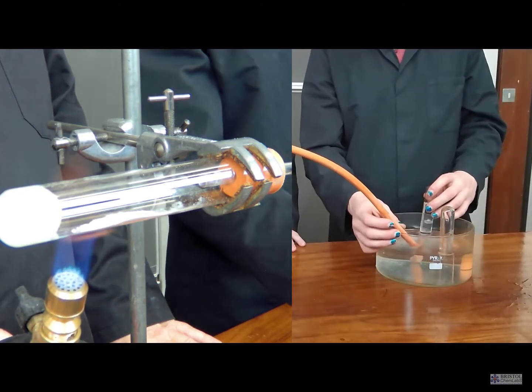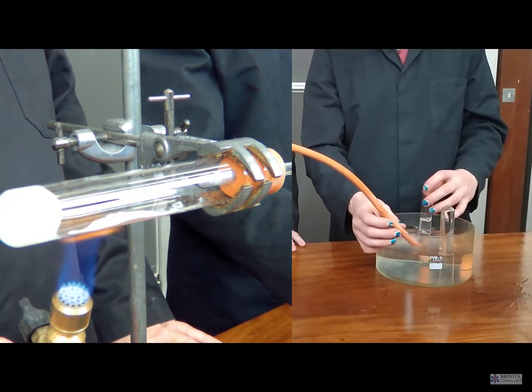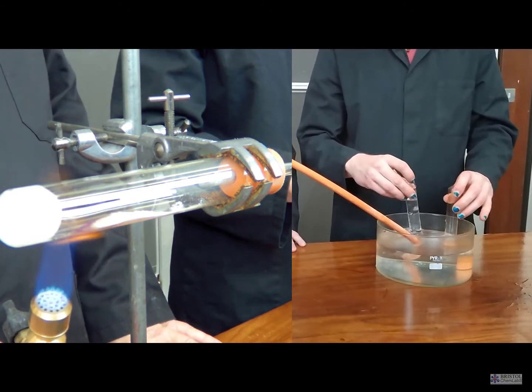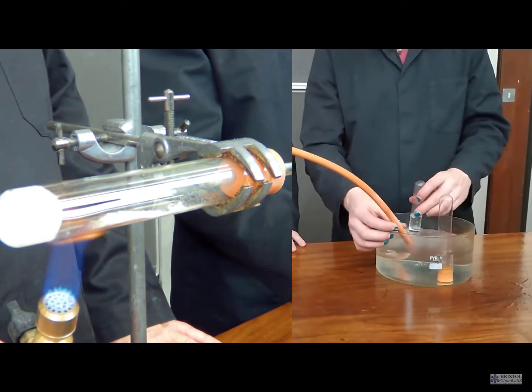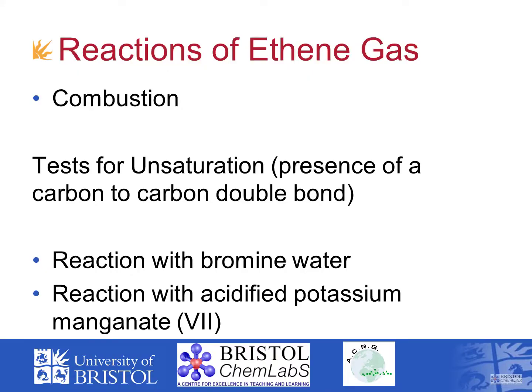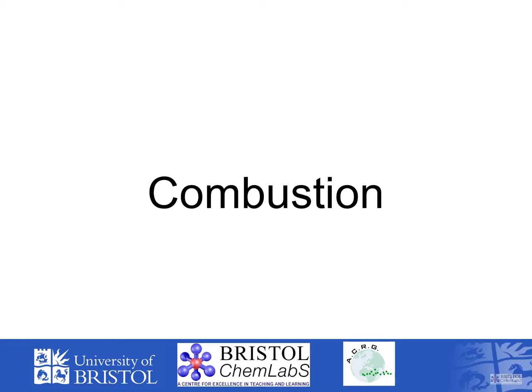The ethene gas can be collected by the downward displacement of water, and once we've got three or four tubes of the gas collected, we can then do some further testing. There are three standard tests for ethene: one is its combustion, second is to use bromine water to show the presence of a double bond—a test for unsaturation—and thirdly the use of acidified potassium manganate VII (potassium permanganate), also as a test for unsaturation.